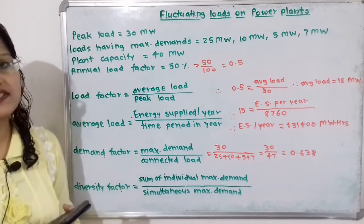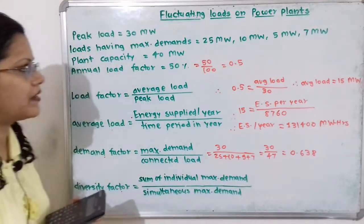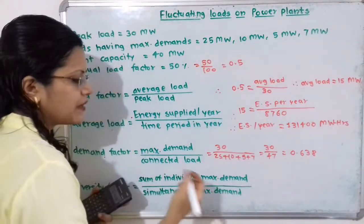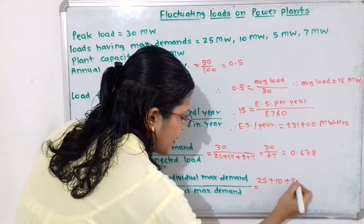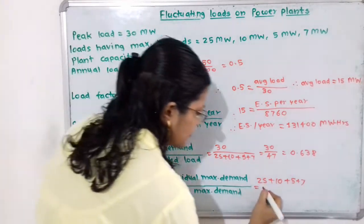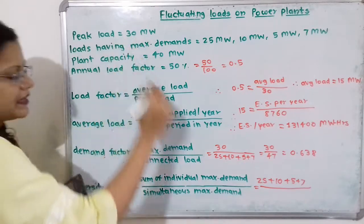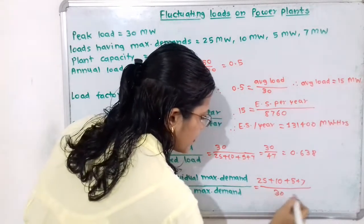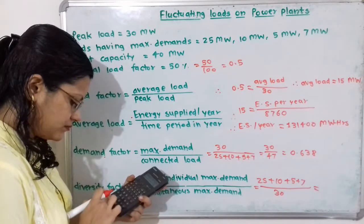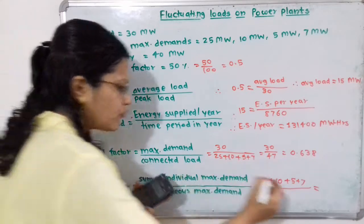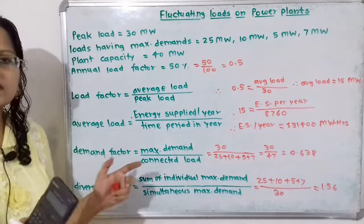Now we will calculate the diversity factor. Diversity factor equals sum of individual maximum demands divided by simultaneous maximum demand. Sum of individual maximum demands is 25 plus 10 plus 5 plus 7, which equals 47. Simultaneous maximum demand is the peak load, that is 30 MW. So diversity factor equals 47 divided by 30, which equals 1.56. There is no unit. So these are the answers.